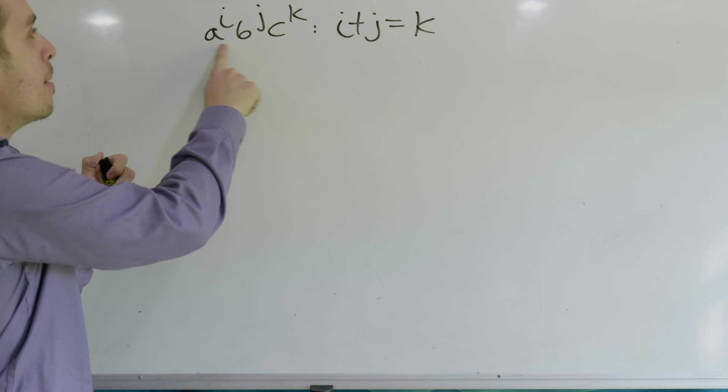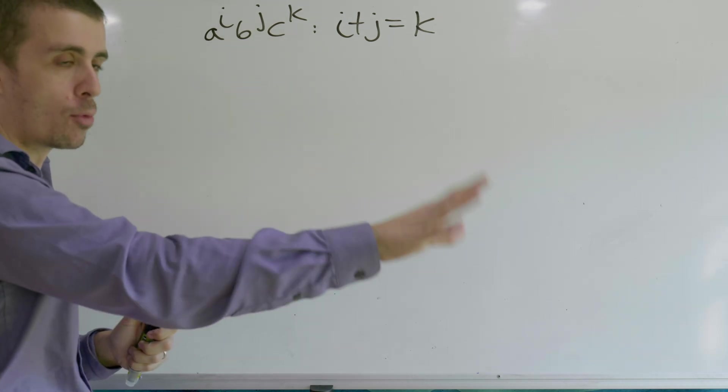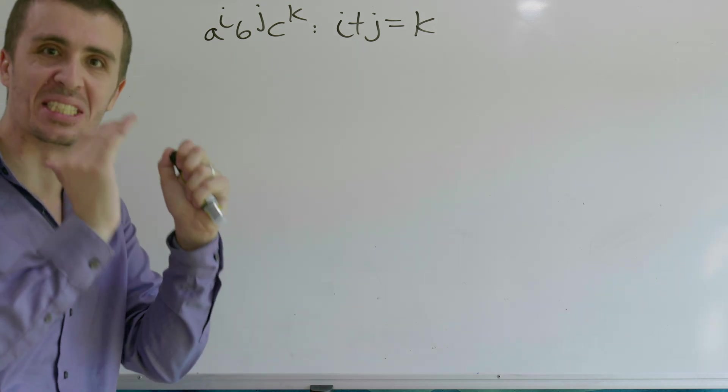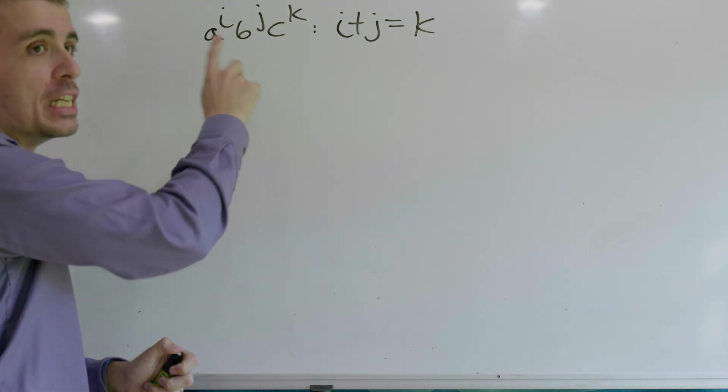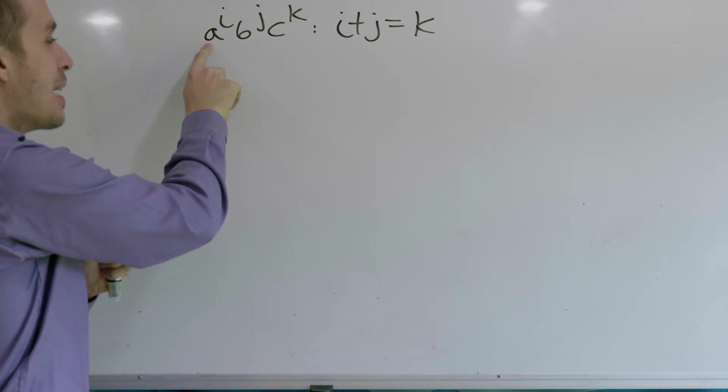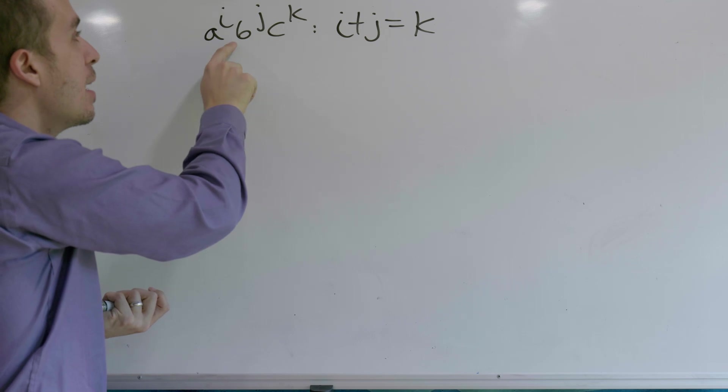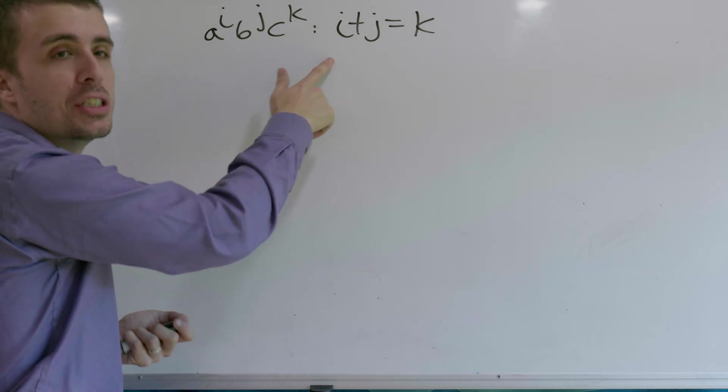So here, the number of a's plus the number of b's is equal to the number of c's. There's no more c's than that, there's no fewer. It's exactly the same as the number of a's plus the number of b's. So therefore, we need to somehow relate each a that we make here with a single c over here, and every b that we make with a single c also.